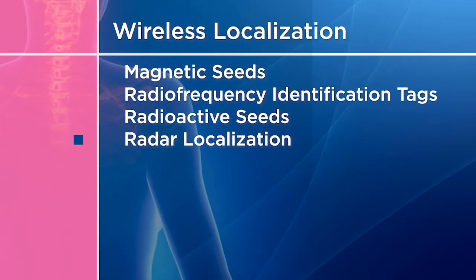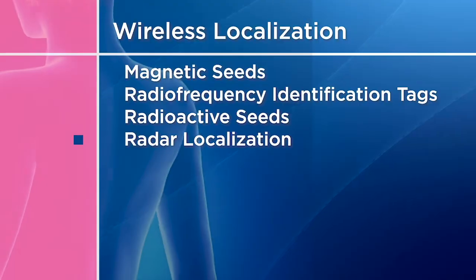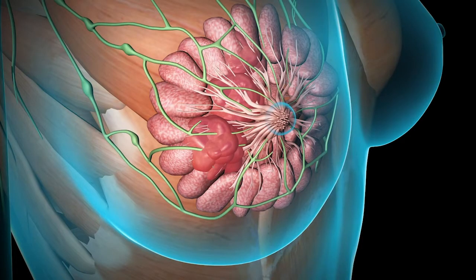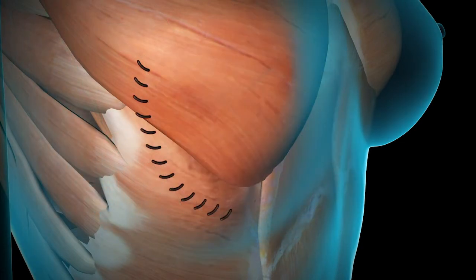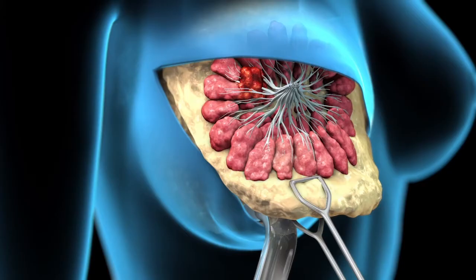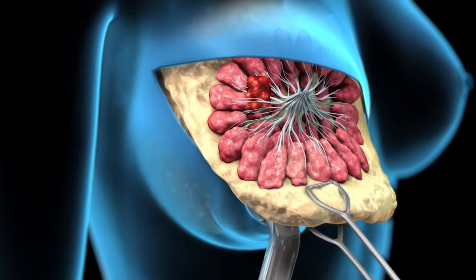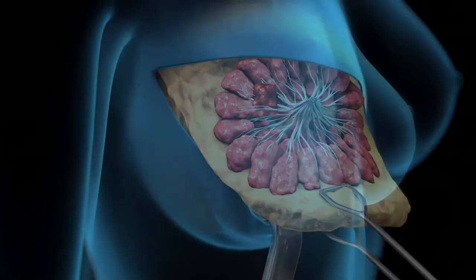The other option is a mastectomy, which means removal of the entire breast. When a mastectomy is performed today, it frequently can be done with immediate reconstruction. Breast reconstruction is often performed by a plastic surgeon while they are assisting the breast cancer surgeon in the operating room.